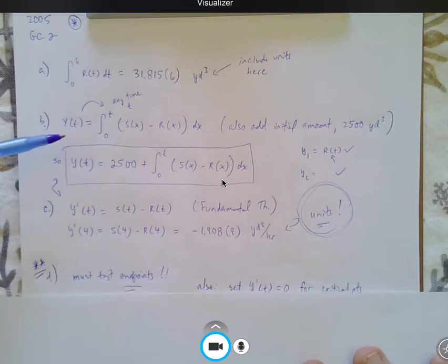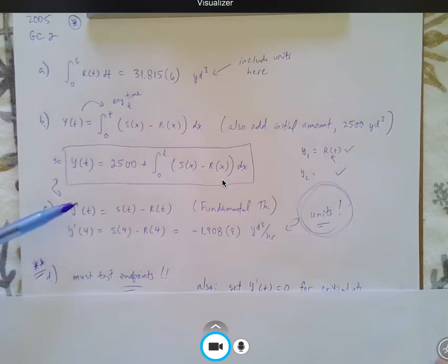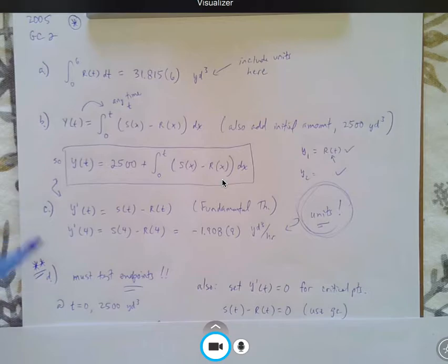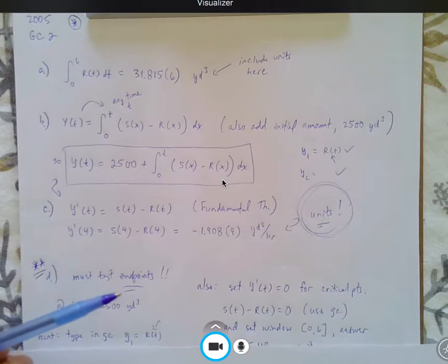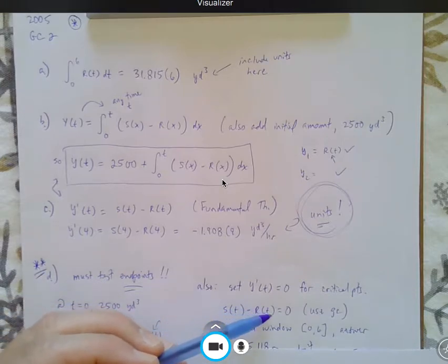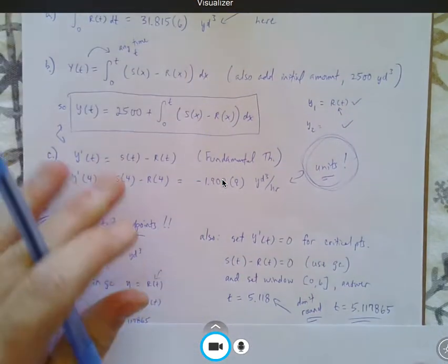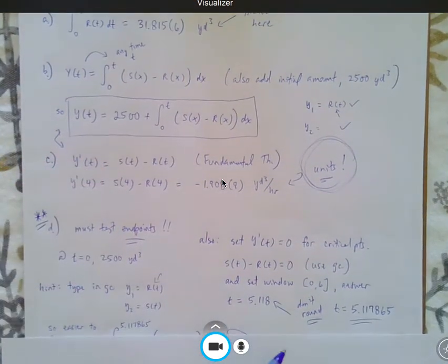And then part D, I put a double star here, because I thought that was just a really hard question. Statistically, it was one of the hardest questions of recent years, even though I'm going back 15 years. But the key to this question is you have to test the endpoints. So, I'm setting the derivative equal to 0 to find critical points, but I also have to test the endpoints. At time 0, I have 2,500 cubic yards, okay? So, using my calculator, S of T minus R of T equals 0 only at time 5.117 whatever.